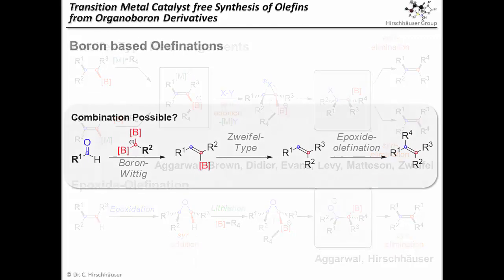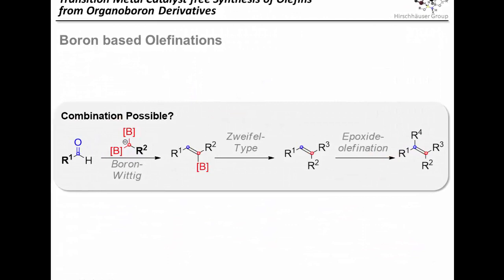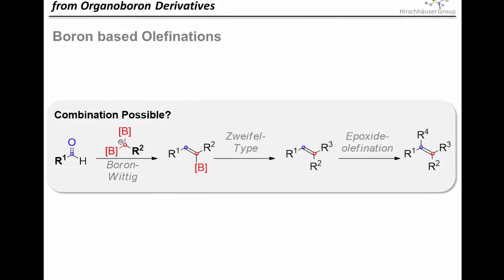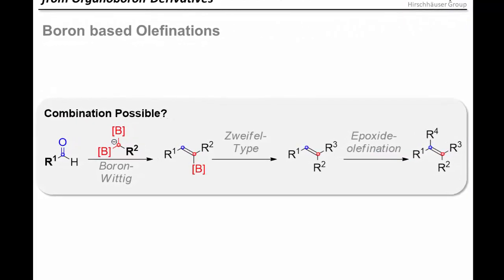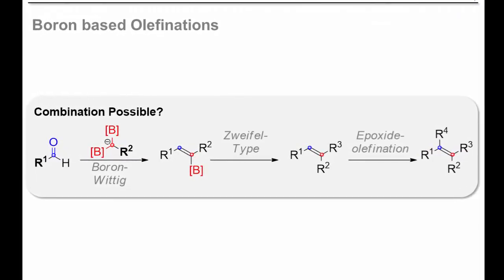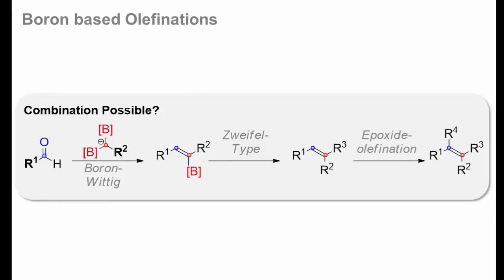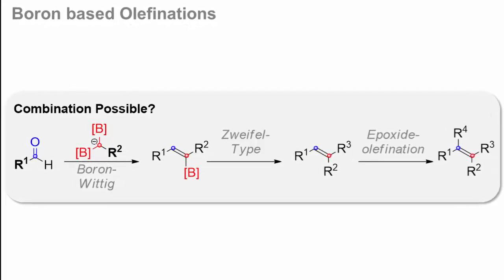The 1,2-rearrangement then again leads to our central elimination precursors, which undergo syn elimination upon heating. The nice thing about this olefination method is that it can be applied in an iterative manner, which allows for assembling highly substituted olefins one substituent at a time. However, it should be mentioned that epoxide lithiation is not always trivial, and issues of regioselectivity can arise upon installation of the third substituent. Disubstituted vinyl boronates are accessible by boron-Wittig reaction and can be turned into tri-substituted alkenes by Zweifel-type reactions. Therefore, tetrasubstituted olefins could be made by subjecting these products to the epoxide olefination sequence, as long as the lithiation of the epoxide can be achieved.